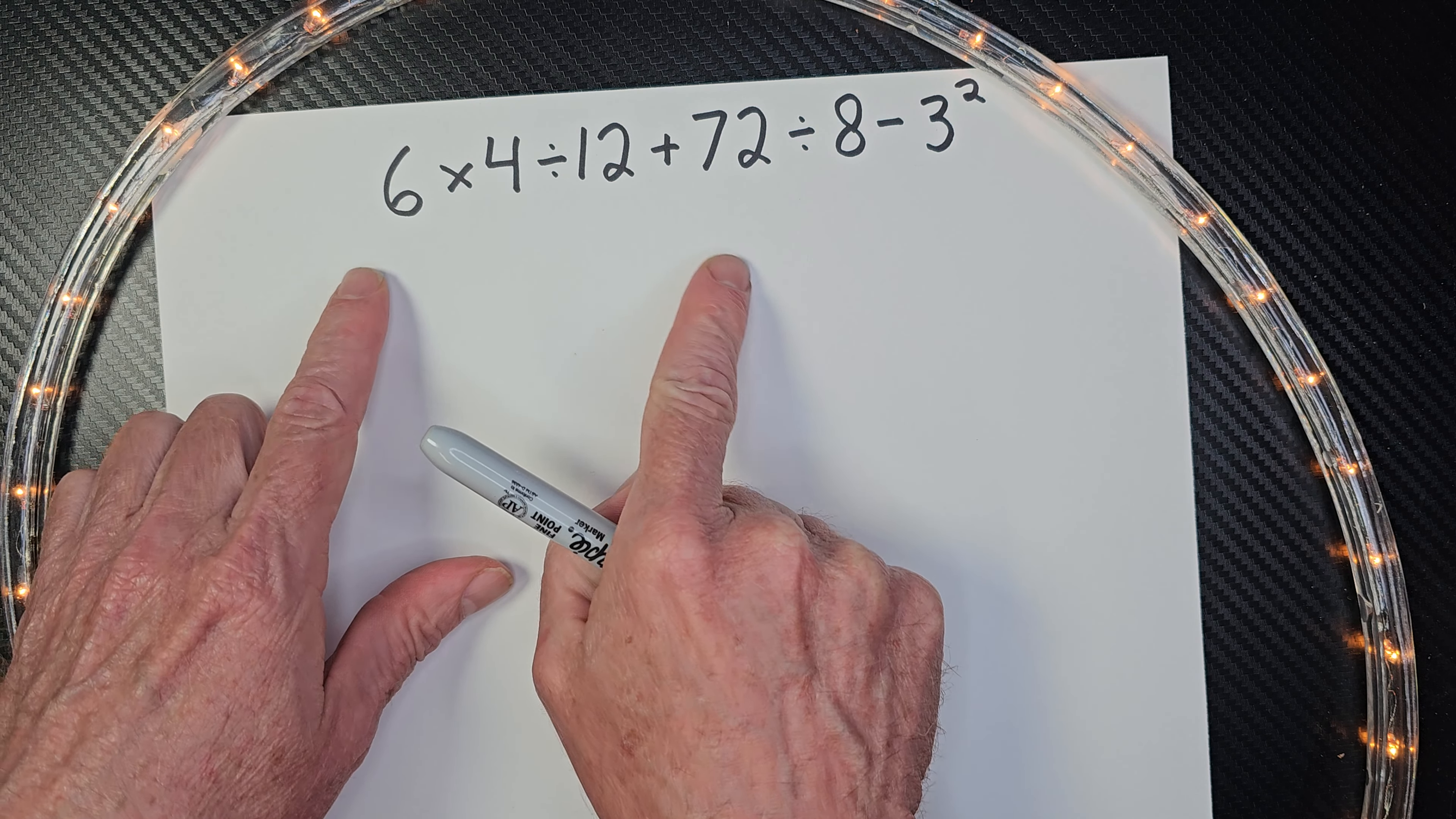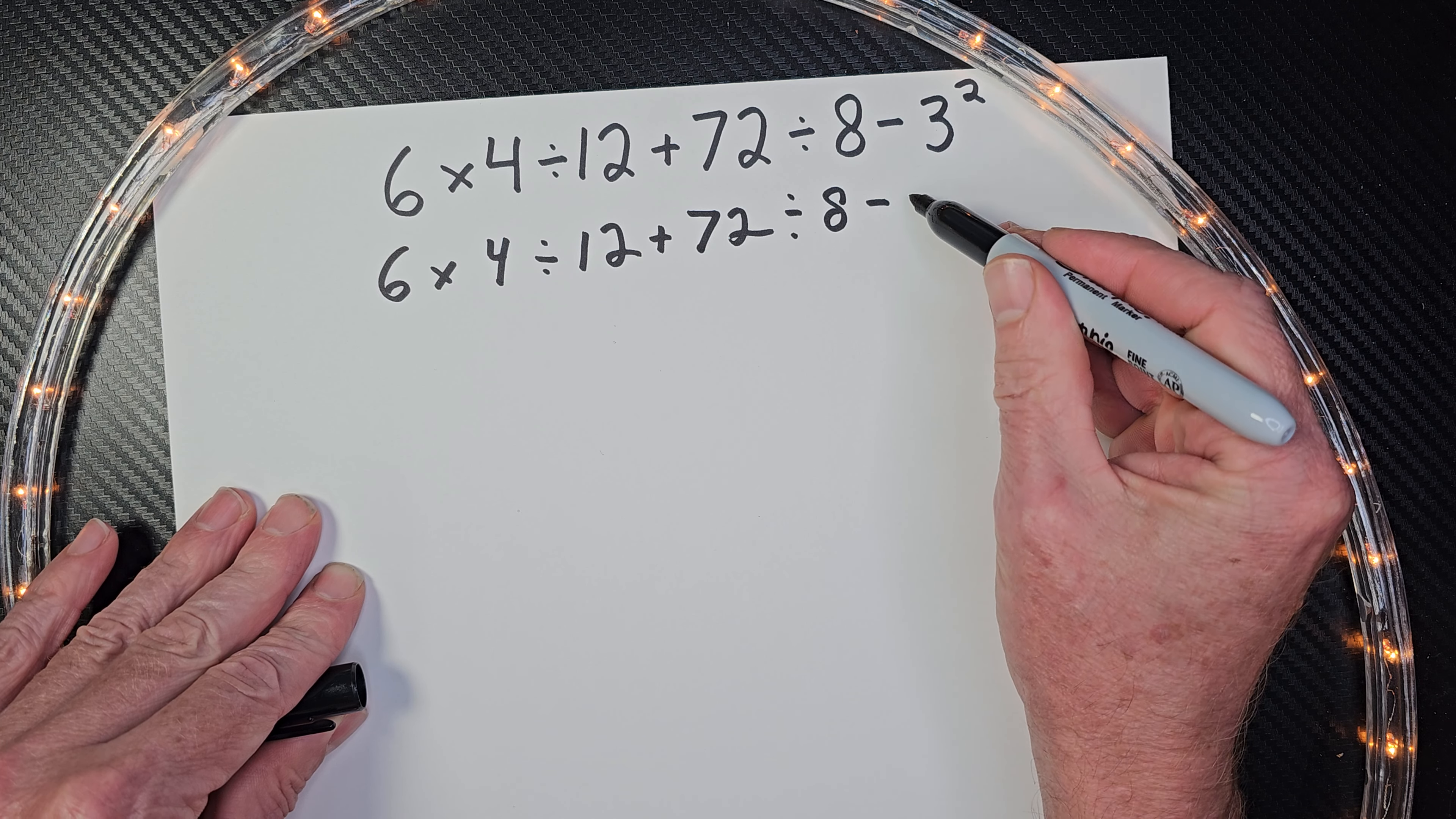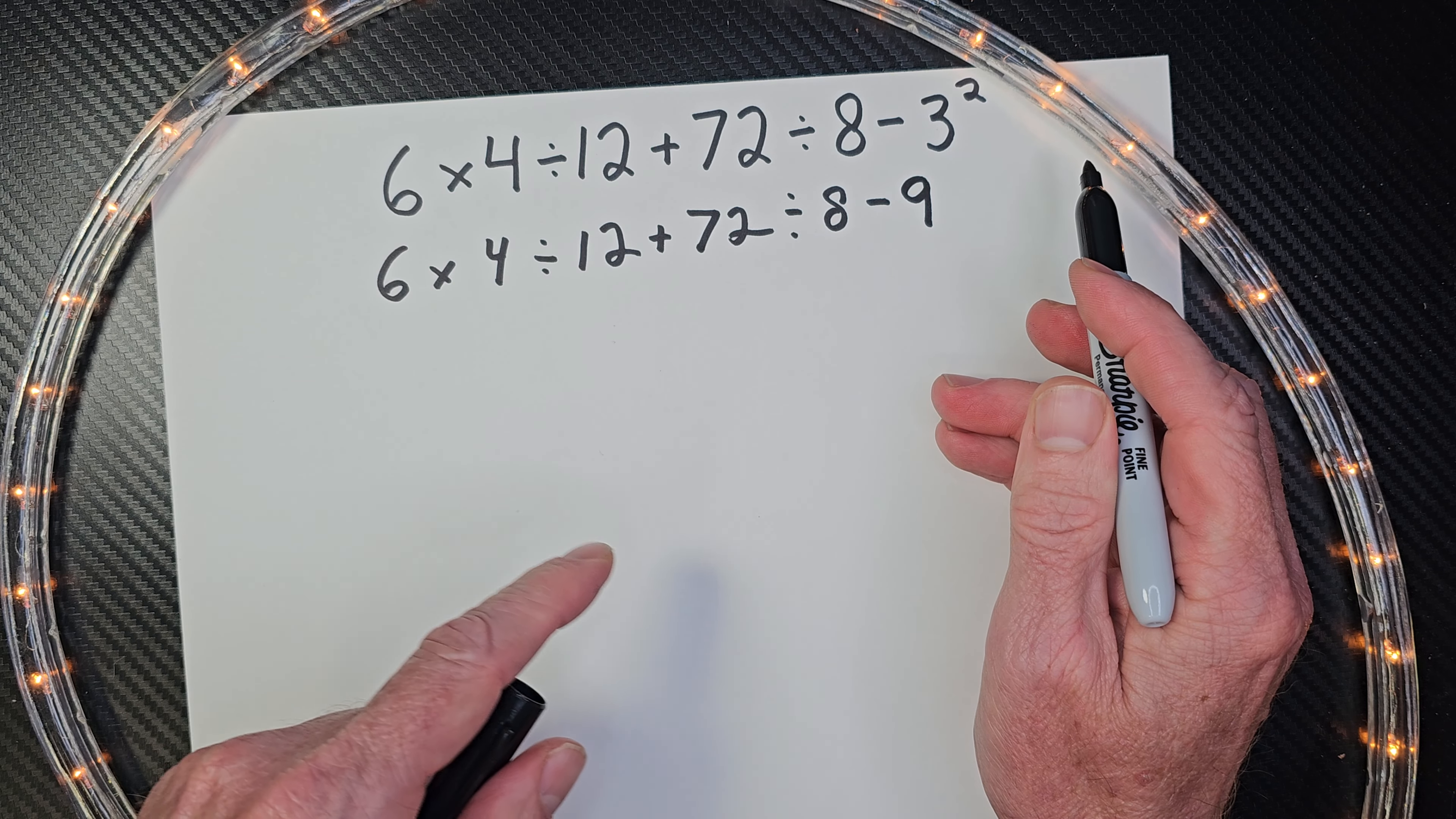Alright, let's begin. First of all, you do what's inside parentheses first. I don't see any parentheses. Next step, we do the exponents. I have exponents right there. So I'm going to go ahead and rewrite this here. I'm going to go 6 times 4 divided by 12 plus 72 divided by 8 minus 3 to the second power. That's like 3 times 3, and that would be 9.